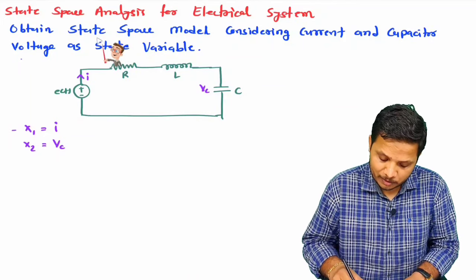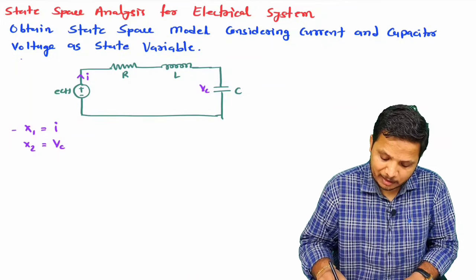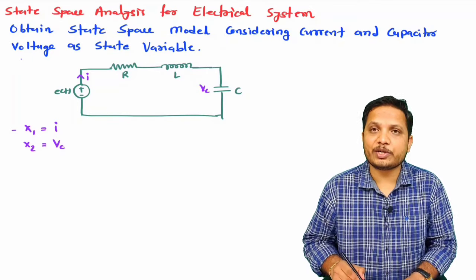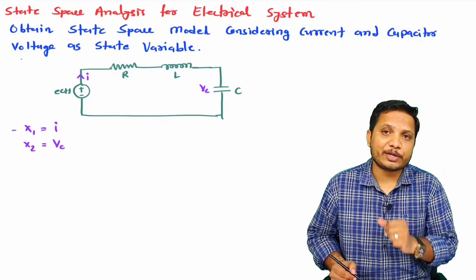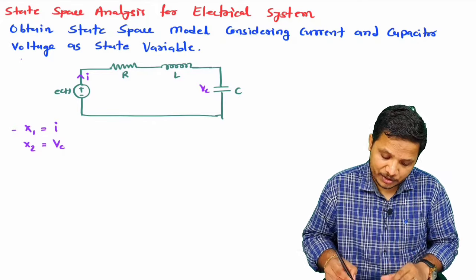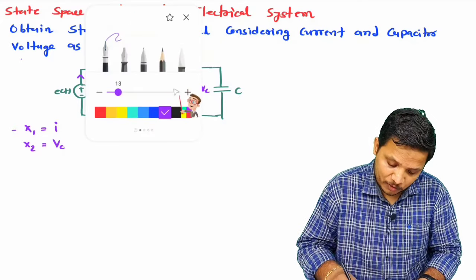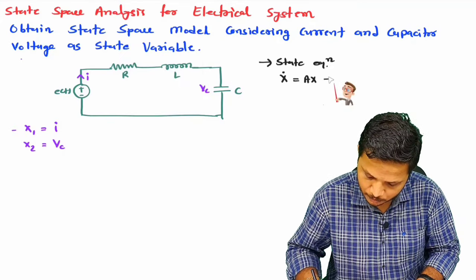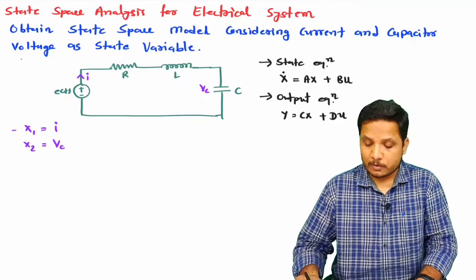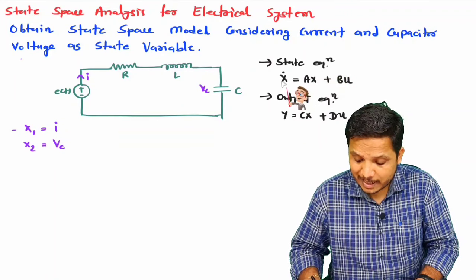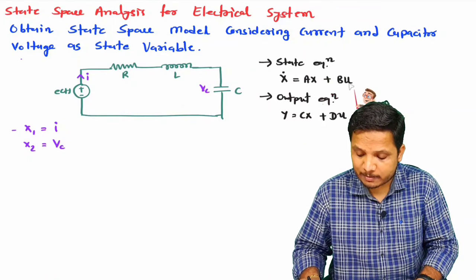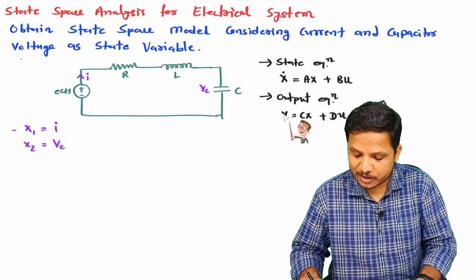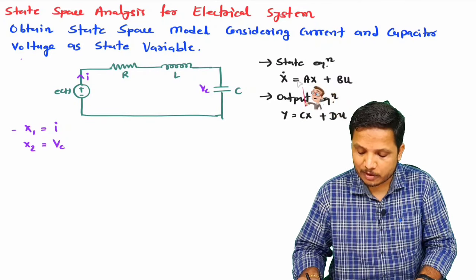To have a state model we need two equations: one is the state equation and the second is the output equation. The state equation is x_dot = Ax + Bu, and the output equation is y = Cx + Du.